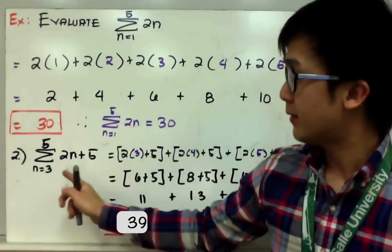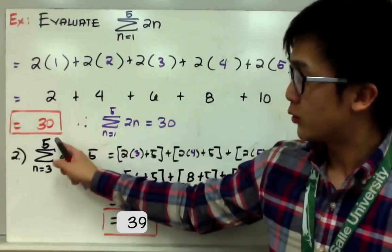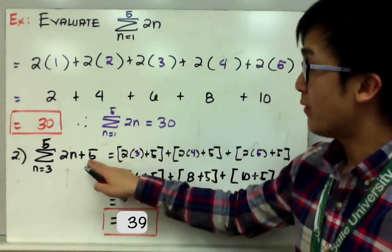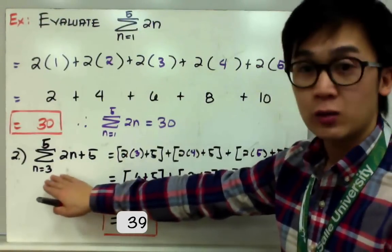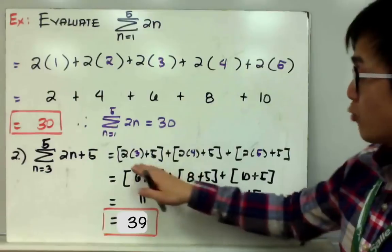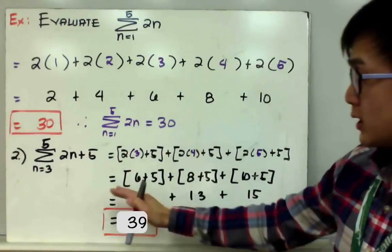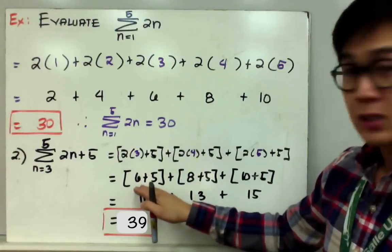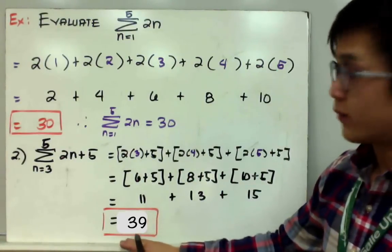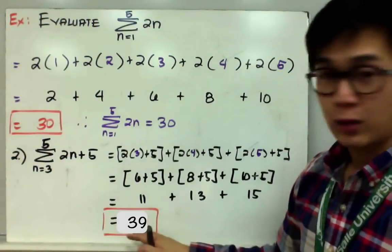For example number 2, we have the summation of 2n plus 5 from n equals 3 to 5. Notice that we start with 3 because that's the lower limit and end with 5 because that's the upper limit, giving us 3 terms. Simplifying: 2×3+5 is 6+5=11, then 8+5=13, then 10+5=15, which gives a total of 56 — wait, 11+13+15=39... so the summation of 2n+5 from 3 to 5 equals 56 as stated.